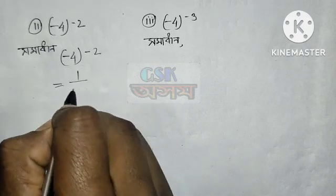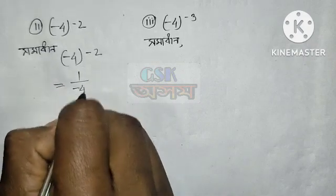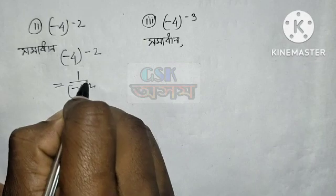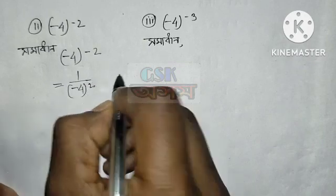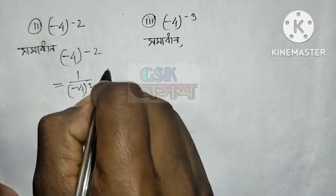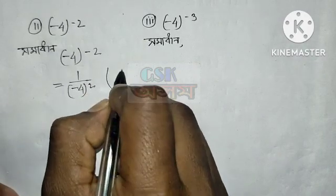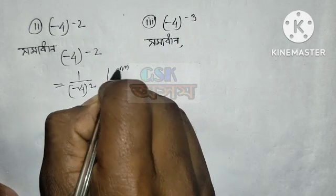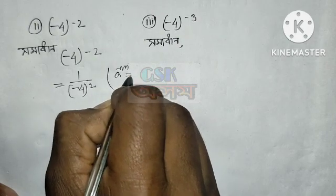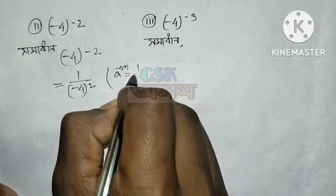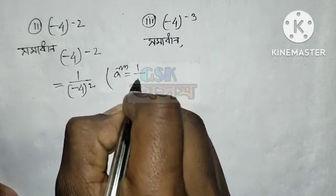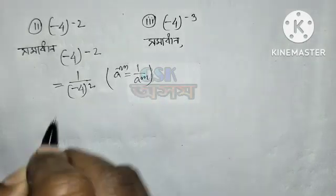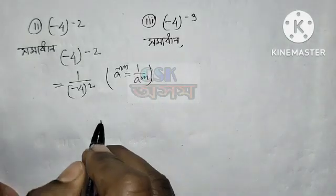So we get 1 by minus 4 squared. Because we know: a to the power minus m is equal to 1 by a to the power m.